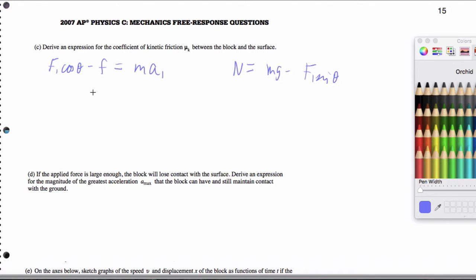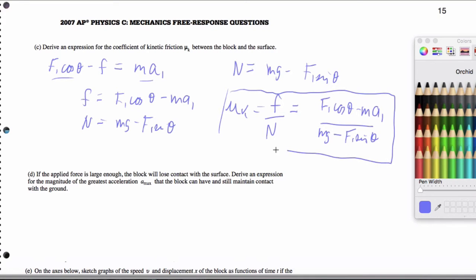So to this end, the friction force, since these are supposed to be known, all these letters, I can actually isolate the friction as F1 cosine theta minus MA1. And my normal force is mg minus F1 sine theta. And so my coefficient of friction is going to be F over N, because I'm using the friction equation. So that's going to give me F1 cosine theta minus MA1 all over mg minus F1 sine theta. And so that's going to be my expression for mu.